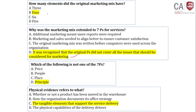Which of the following is not one of the 7 Ps? Price, people, place — 'principle' is not one of the 7 Ps. Physical evidence refers to the tangible elements that support service delivery.